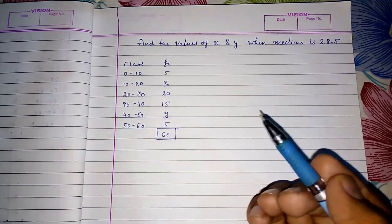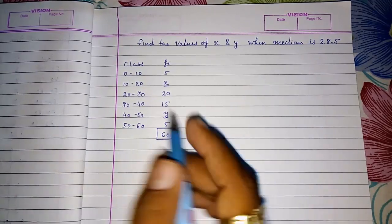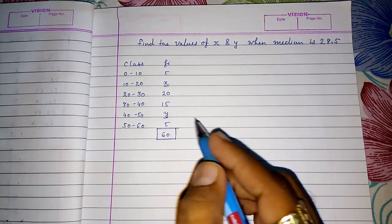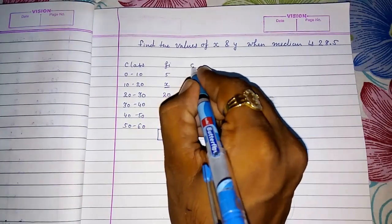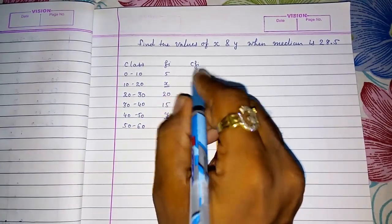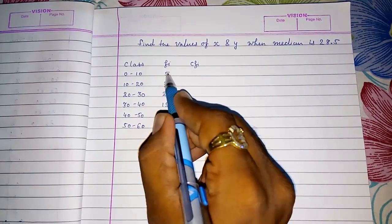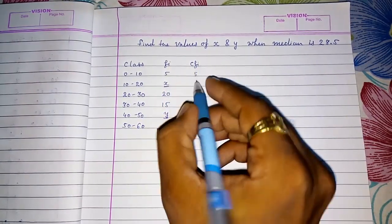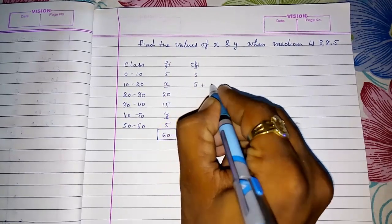For finding median first we were finding CFI. Here also, we don't have this X and Y still we have to find CFI only. This is cumulative frequency. How we were finding: 5, so directly 5 plus 0 is 5. 5 plus X so it will be 5 plus X.